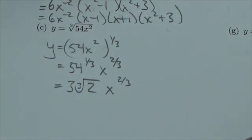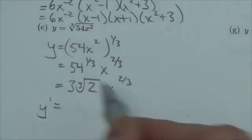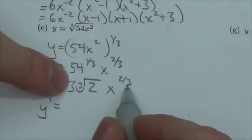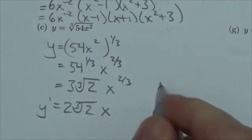So the derivative will be: bring down the 2/3. Well, the 3's will cancel, so I'm going to be left with 2 times the cube root of 2, x to the negative 1/3.